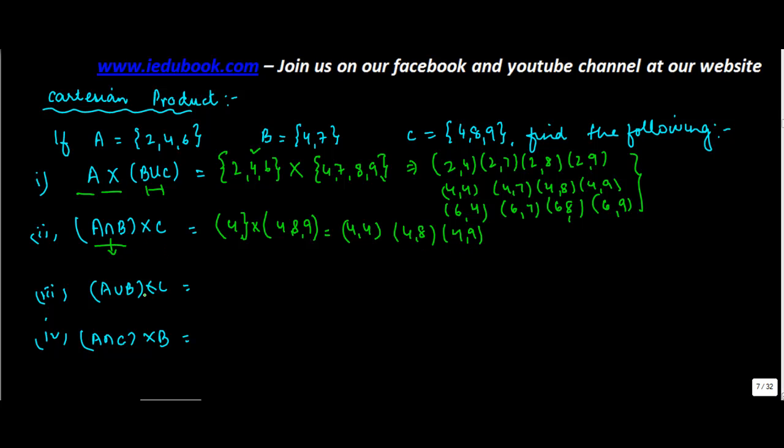A union B cross C. Now A union B will be what? 2, 4, 6. Then 4 is there, 7. Cross C which is {4, 8, 9}. So how do you expand? You start picking one by one. First, take 2. 2 with 4, 2 with 8, 2 with 9. Then you take 4. 4 with 4, 4 with 8, 4 with 9.